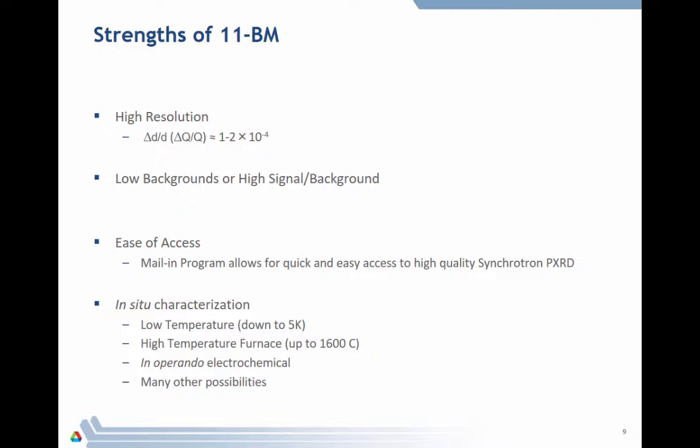So let's just summarize here some of the strengths. High resolution, low background or high signal-to-background measurements, ease of access. I didn't mention it much, but we can do quite a bit of in-situ characterization. We have a helium cryostat that can go down to low temperatures, 5 Kelvin. We have a high-temperature furnace which can go up to 1600°C. You can do in-operando electrochemical work, as well as many other sorts of in-situ characterizations. This is less commonly done than at 17-BM because, as I mentioned, the timescale for data collection is longer. At 17-BM and some of these other beamlines that utilize area detectors, you have timescales of seconds to measure a pattern. Here we're talking at minimum 5 to 10 minutes, standardly an hour. So you have to decide whether you need this resolution.